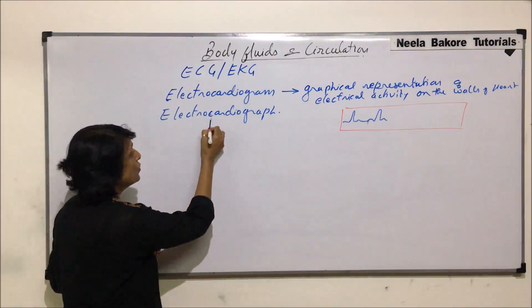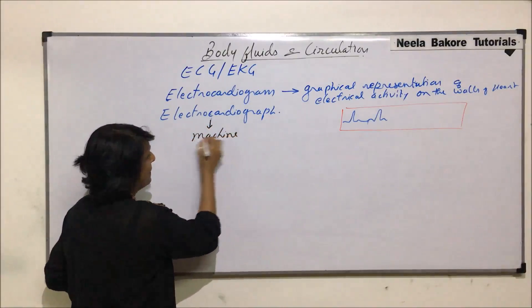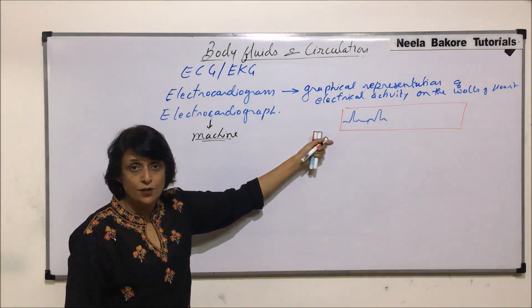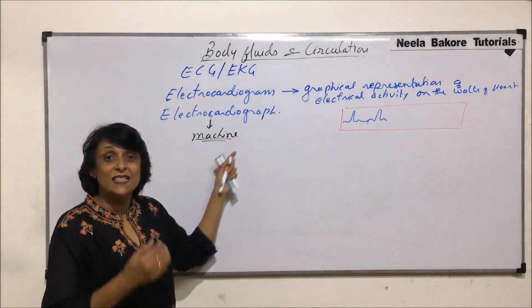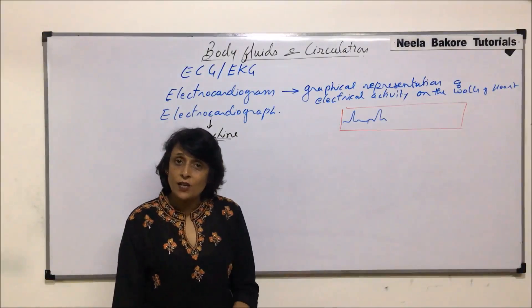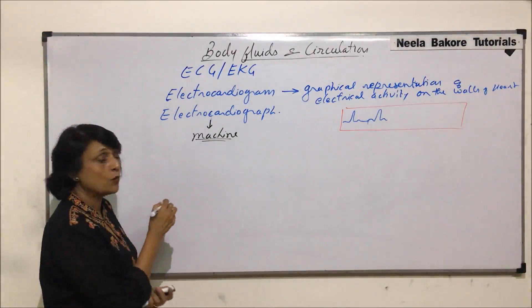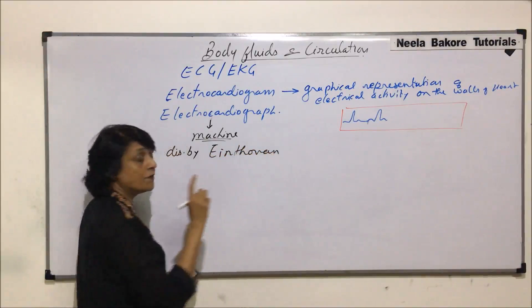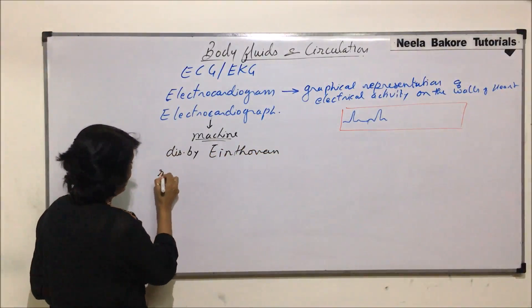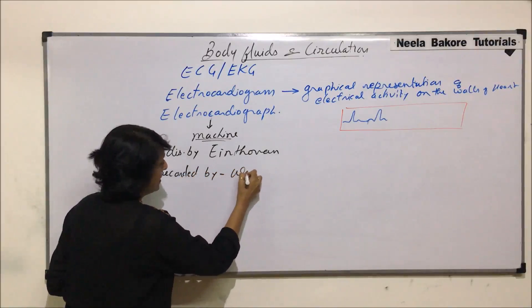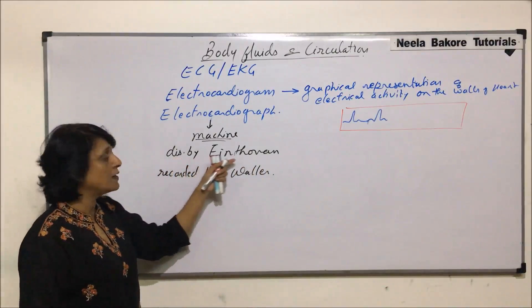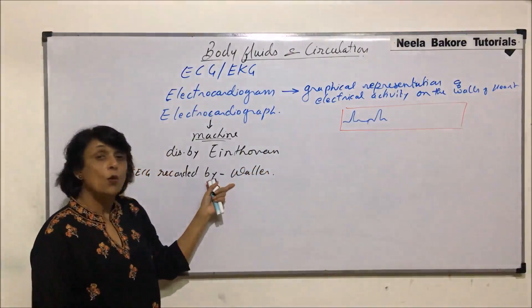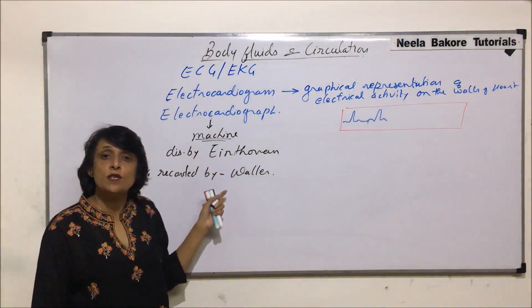Electrocardiograph is used for the machine. Many people get confused — because 'graph' is written in electrocardiogram, they think it should be the graphical representation, but it is just the reverse. Electrocardiograph is the machine and electrocardiogram is the graphical representation. This machine was discovered by Einthoven, but the first ECG was recorded by another scientist, Waller, using the machine developed by Einthoven.